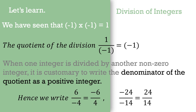Hence we write 6 upon minus 4 — since the denominator is negative, the negative sign moves to the numerator — as minus 6 upon 4. In the same way, when both numerator and denominator are negative, the answer will be positive.